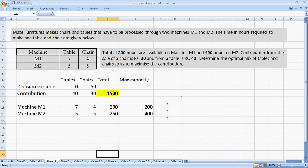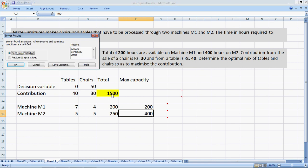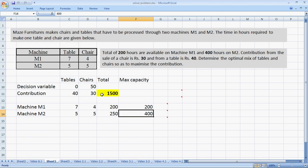The constraints: machine M1, the maximum capacity available is 200 hours and on machine M2, the maximum capacity available is 400 hours. We formulate it, write the formulas and then go to data solver and ask it to solve to give us an answer of maximum contribution as 1500 rupees and the decision is that you would make 50 chairs and no tables. Perfect.